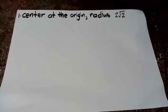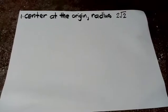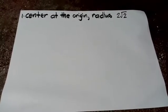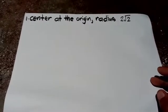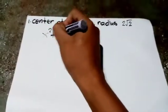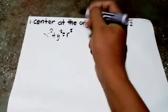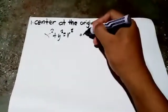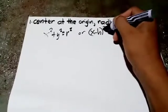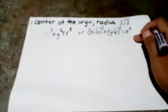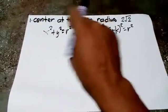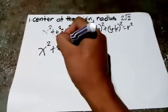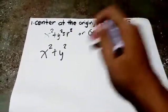Number 1: center at the origin, radius 2√2. Our objective is to find the standard equation of the circle with the given condition. Recall that the standard equation is x² + y² = r² when the center is at the origin, or (x-h)² + (y-k)² = r² when the center is at any point. Since the center is at the origin, we use x² + y², and we just need to find r².